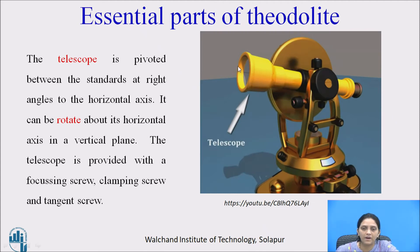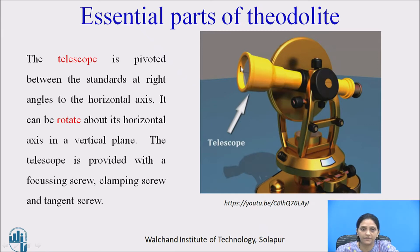The first main and important part is the telescope, through which we observe the object. At one end of the telescope there is an object glass and at the other end there is an eyepiece. With the help of a focusing screw we clear the image of the object. The telescope is pivoted between the standards at right angles to the horizontal axis, and it can be rotated about its horizontal axis in a vertical plane. The telescope is provided with a focusing screw, clamp screw, and tangent screw.